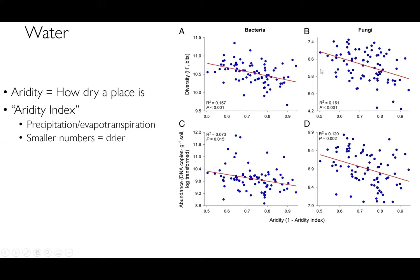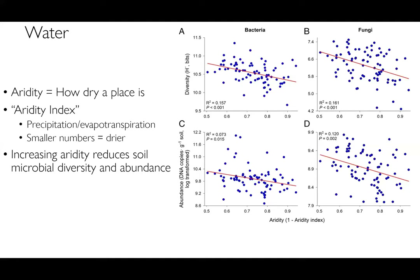Looking at diversity and abundance of bacteria as a function of the aridity index, what you notice is that as aridity increases — as we get wetter — both bacterial and fungal diversity decreases. The abundance of bacteria also decreases slightly as it gets wetter. This might seem counterintuitive — you might imagine that a tropical rainforest has more microbes than a dry place — but drier places have much more variation in chemistry and much more patchiness than wetter places, which tend to be more homogeneous at both small and large spatial scales.